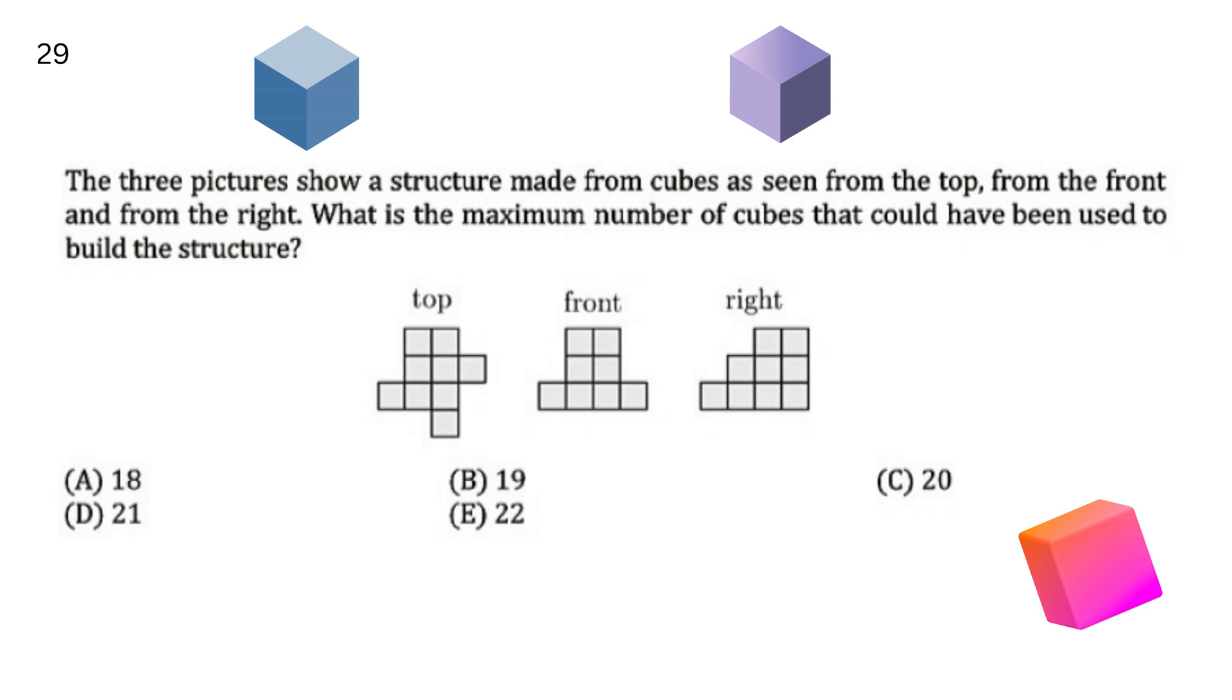The three pictures show a structure made from cubes as seen from the top, from the front and from the right. What is the maximum number of cubes that could have been used to build the structure? This shape ko banane ke liye maximum kitne cubes lagay hoonge? A 18, B 19, C 20, D 21, E 22. Your answer is B 19.